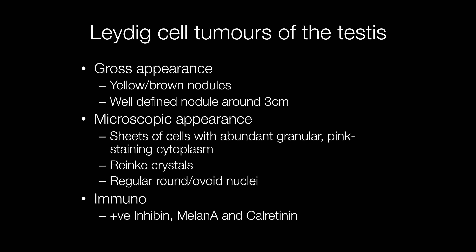Histologically there are sheets of tumour cells with abundant granular pink staining cytoplasm, regular round to ovoid nuclei, and there are crystals called Reinke crystals or crystalloids. As with other sex cord stromal tumours, useful immunostains include inhibin, melan A, and calretinin.